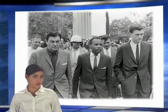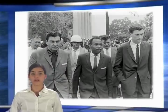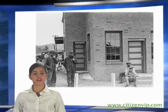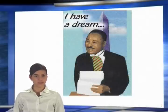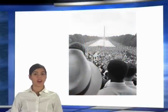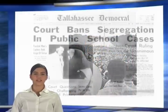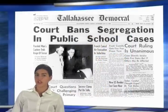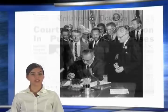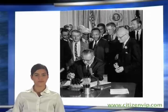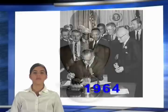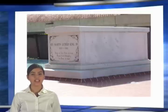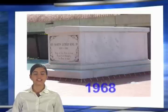Martin Luther King Jr. was an African American minister who worked to end discrimination against minorities in the 1960s. He wanted all Americans to have rights. Because of his work, laws were passed that help protect the rights of all people. In 1964, Martin Luther King won the Nobel Peace Prize. He was assassinated in Tennessee in 1968.